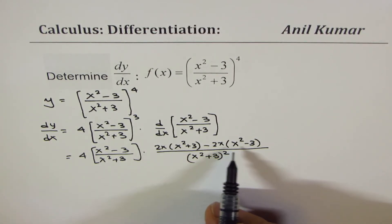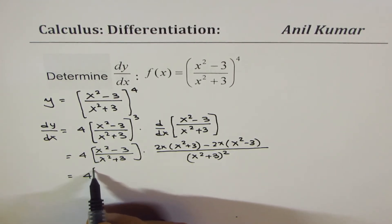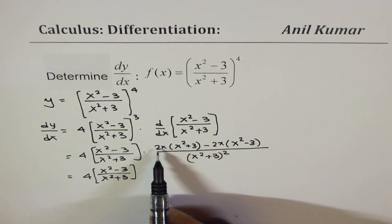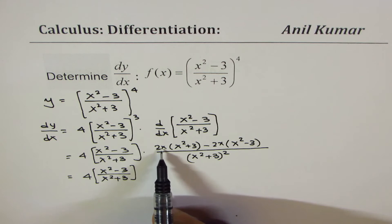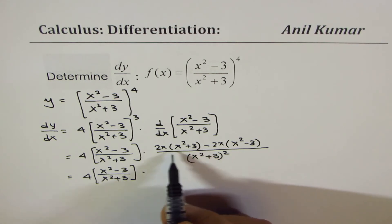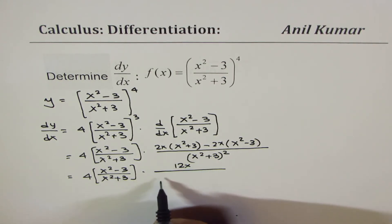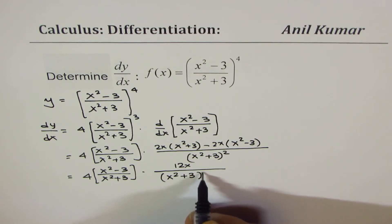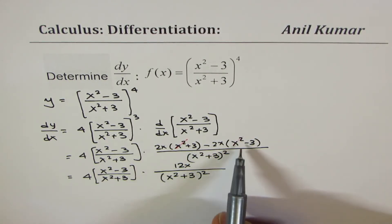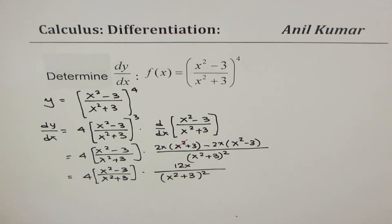Now we can expand and simplify the numerator. So we have 4 times — let's rewrite this — x squared minus 3 over x squared plus 3 to the power of 3. Now here, 2x cubed and 2x cubed will cancel, and these terms will add up. So 2 times 3 is 6, 6x plus 6x becomes 12x. So we have 12x in the numerator divided by x squared plus 3 whole square. So these two terms cancel — taking 2x common and minus minus becomes positive — so it is 6 times 2, which is 12.